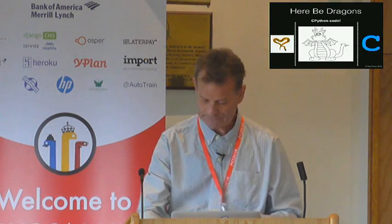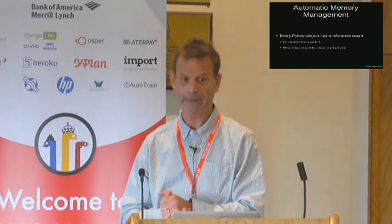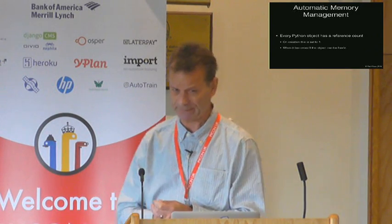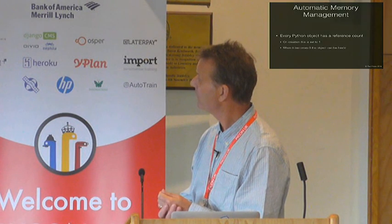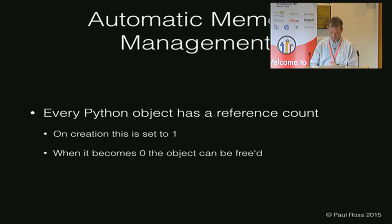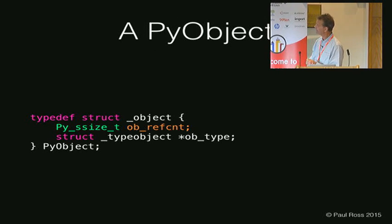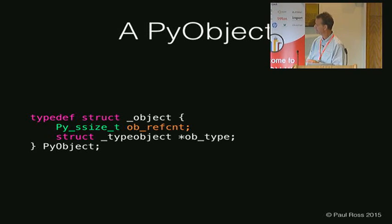Just to get on the same page: Python has automatic memory management. The primary mechanism it uses for doing this is reference counting. A quick primer: whenever you create a Python object, the reference count is set to one. If it ever hits zero, the object can be thrown away. What does a Python object look like? Here's the C code for it. It has two fields in the struct: the first is a ref count, and the second is a pointer to the object itself.